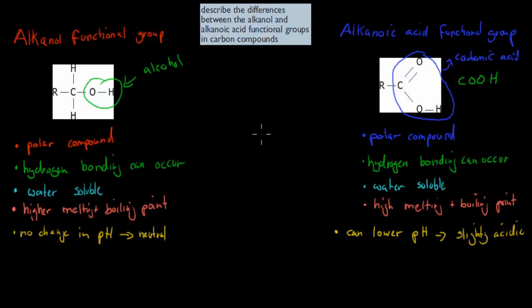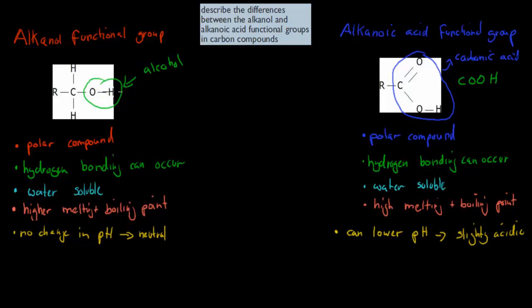To describe the differences, I'll also highlight the similarities. Both are polar compounds, meaning they have an uneven charge — some parts are more positive and some more negative. Because of the OH group, electrons are attracted more to the oxygen, so the hydrogen in the OH group becomes positively charged. A polar compound has one part positively charged and the other part more negatively charged.